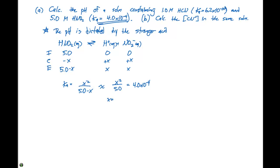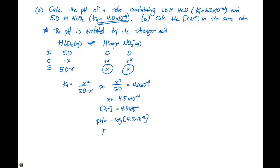Doing the algebra, x equals 4.5 times 10 to the minus 2. Looking back at our ICE table, that equals the concentration of H plus at equilibrium. We can then calculate the pH as the negative log of 4.5 times 10 to the minus 2, which gives a pH of 1.35.